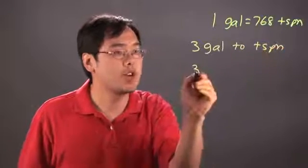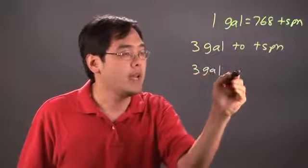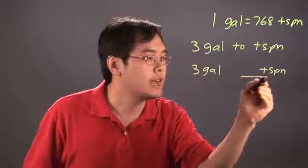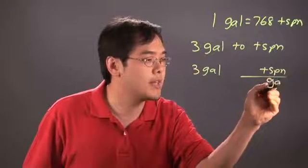You're starting off with three gallons. Since you're converting to teaspoons, that will be the unit on top. And since you're converting from gallons, gallons are going to be at the bottom.